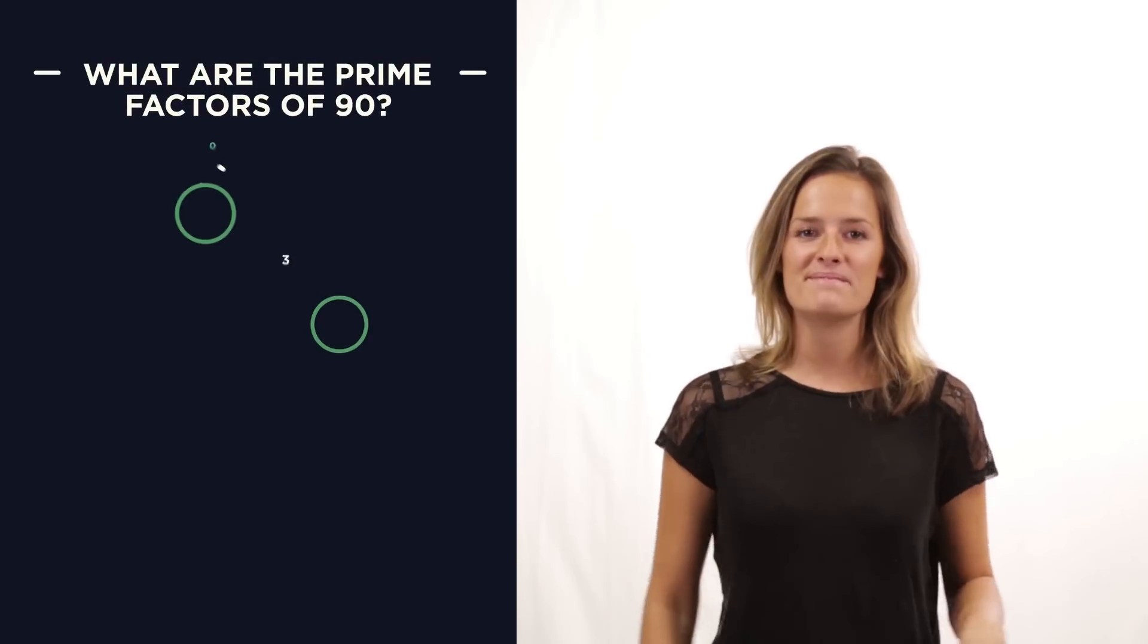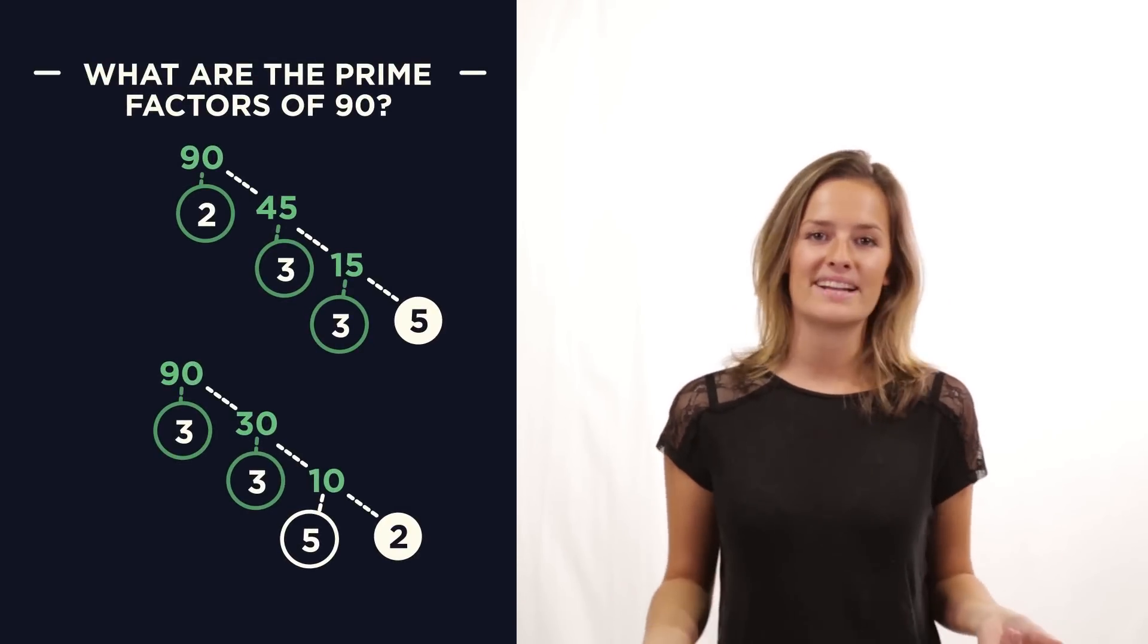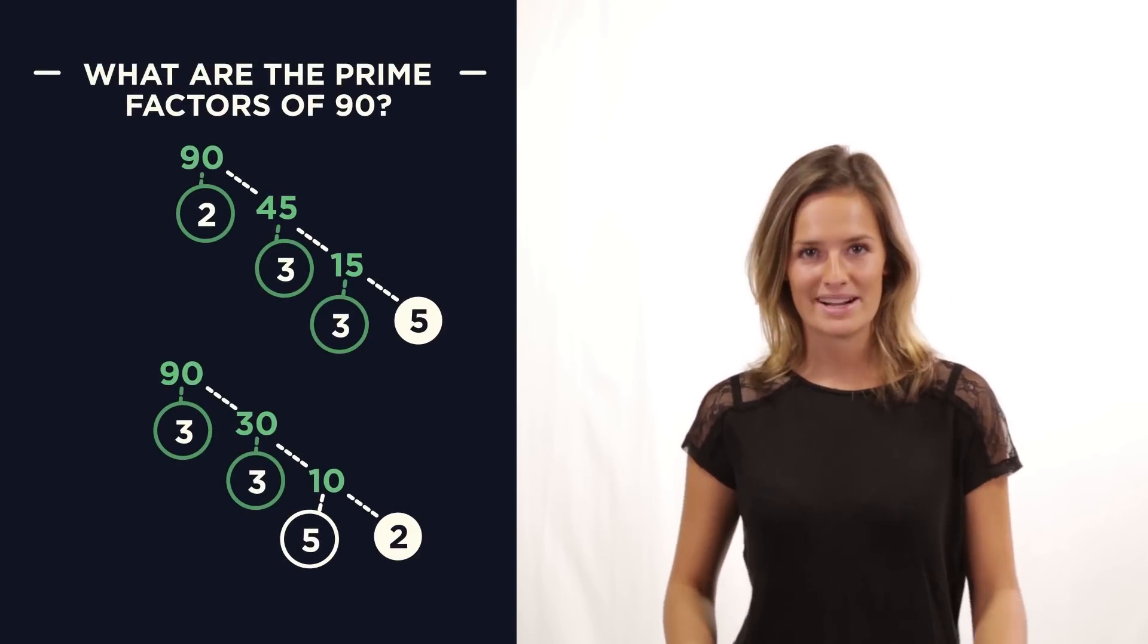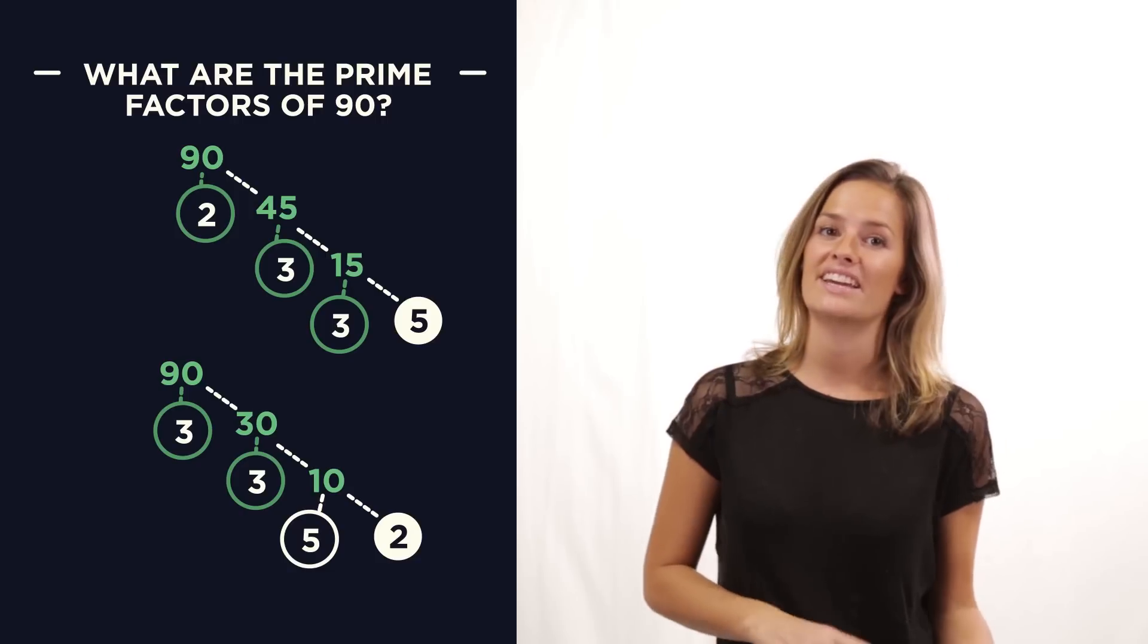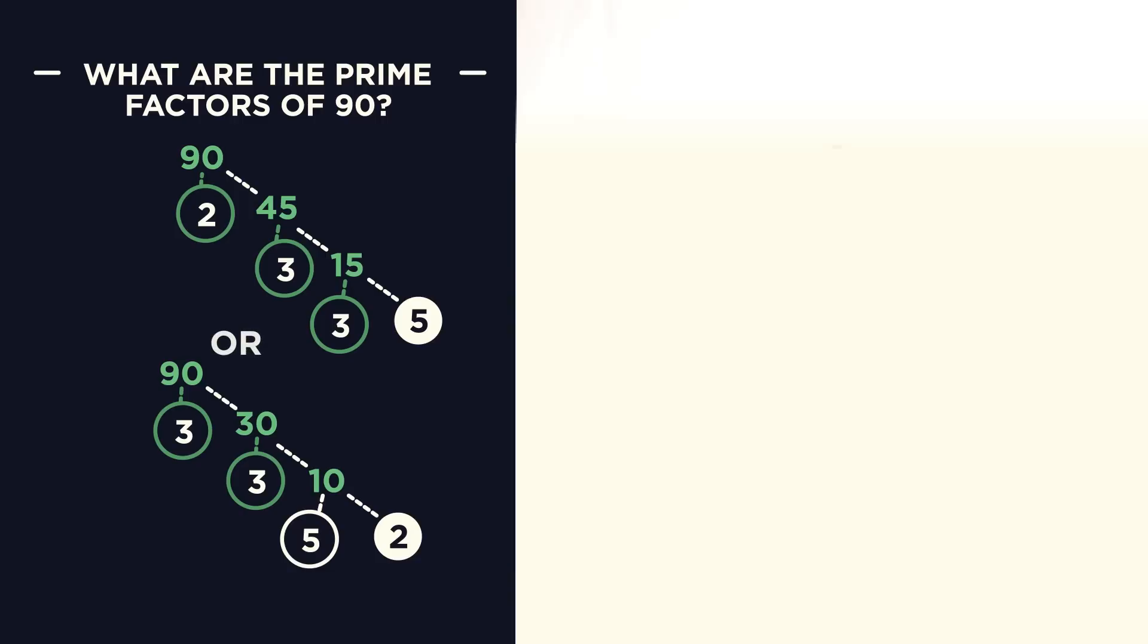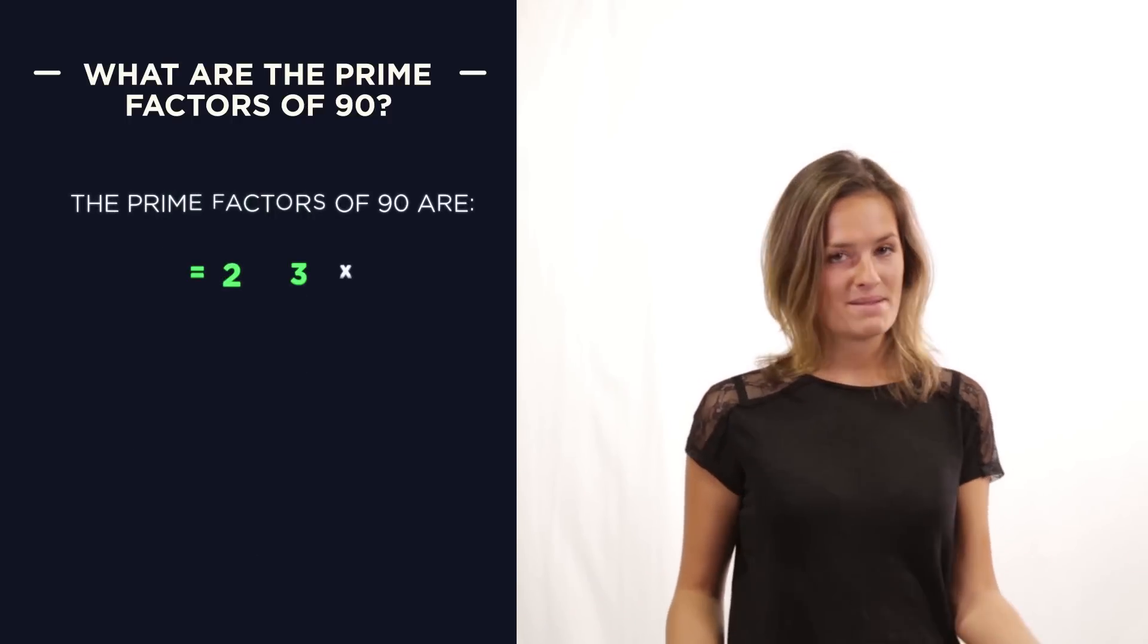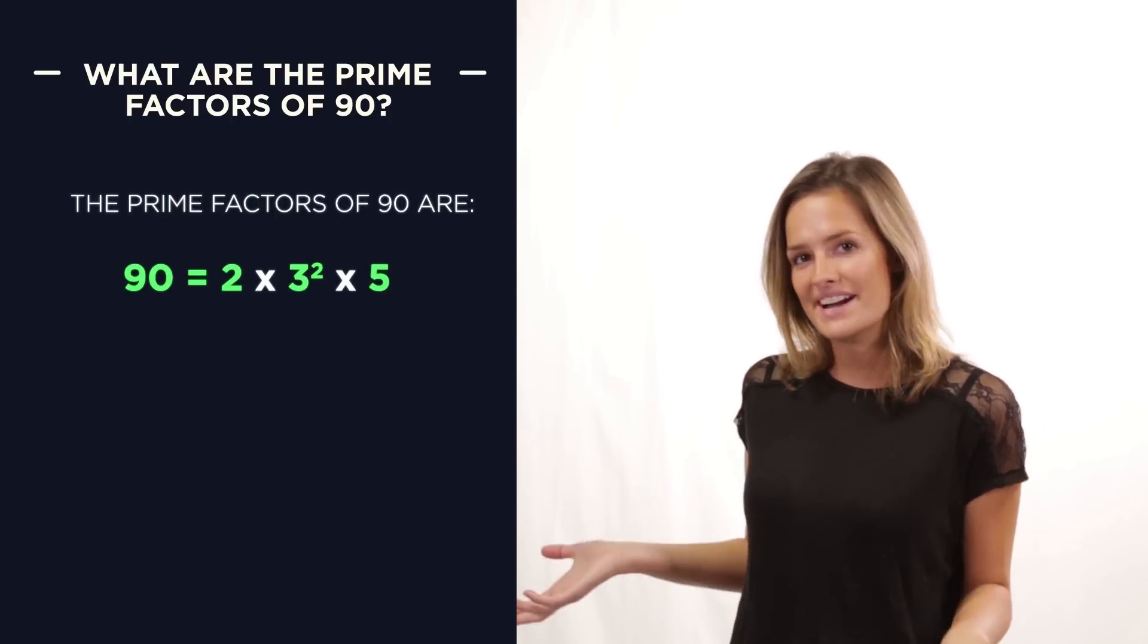The order of prime numbers that you choose doesn't really matter. You'll always get the same answer. We could have done it this way instead, and we still get 2 multiplied by 3 squared, multiplied by 5.